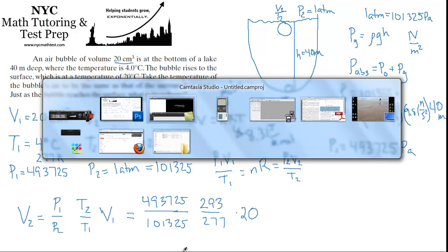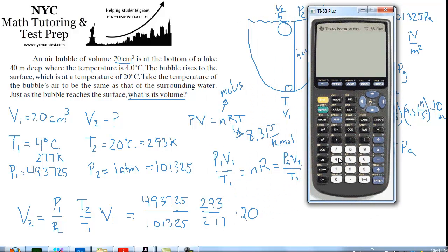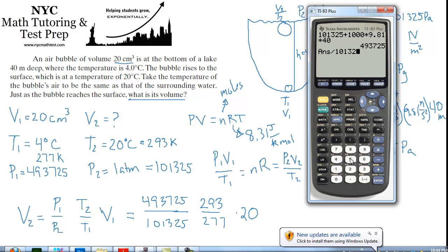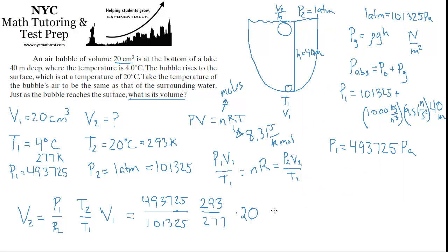Plugging into the calculator: 493,725 / 101,325 × 293 / 277 × 20 gives approximately 103. So V2 ≈ 103 cubic centimeters. The volume of the bubble increased by a factor of about 5 as it rose to the surface.